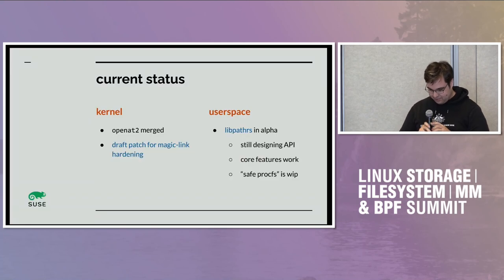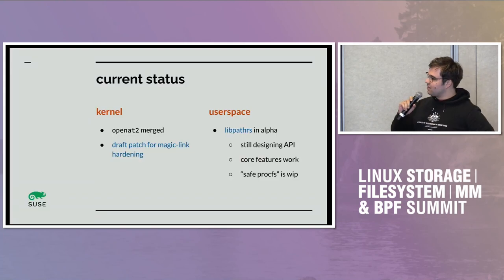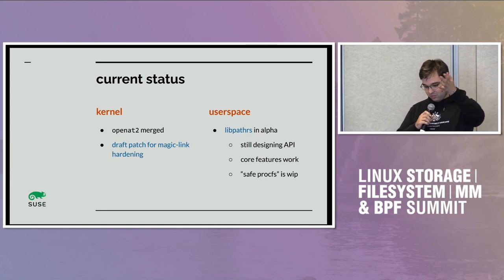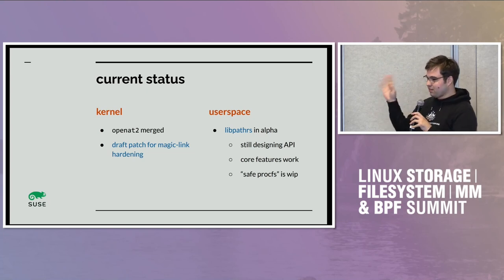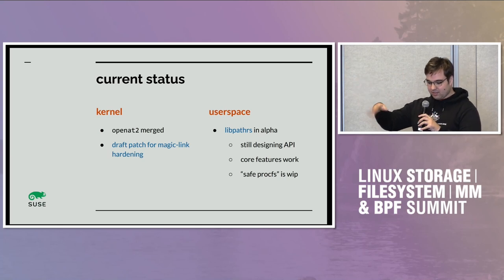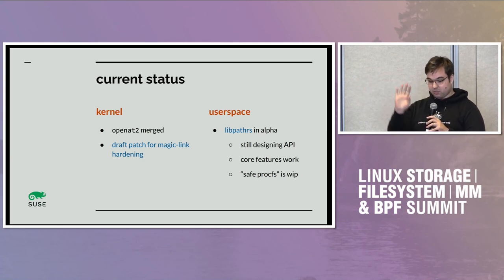The current status of the work I was doing for making VFS stuff less awful for containers: open_at2 is merged; lib path arrest — which is a whole separate thing we could talk about some other time, basically a way to safely do path operations on containers — is still something I'm working on. And this part is just the magic link hardening.